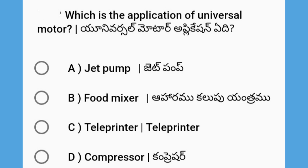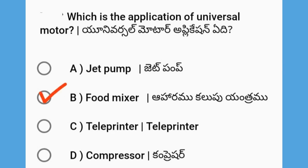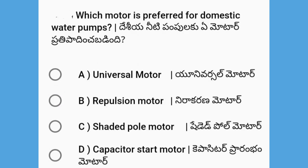Next, which is the application of universal motor? In the universal motor, the options are jet pump, food mixer, teleprinter, and compressor. The answer is food mixer.